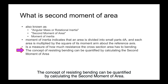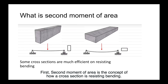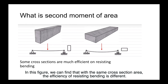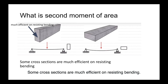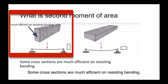The concept of resisting bending can be quantified by calculating the second moment of area. The second moment of area describes how a cross-section resists bending. From the figure, we can find that with the same cross-section area, the efficiency of resisting bending is different — some cross-sections are much more efficient at resisting bending.